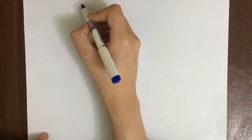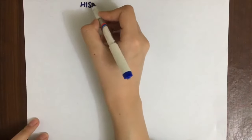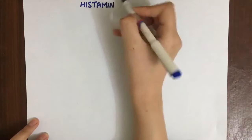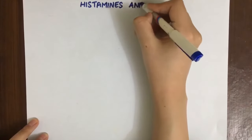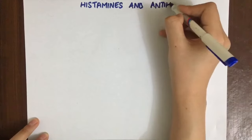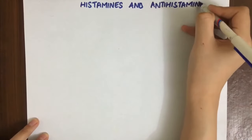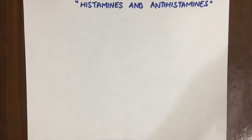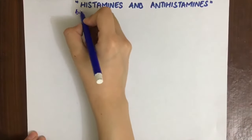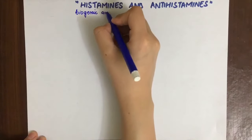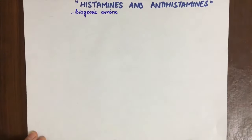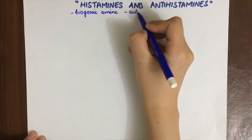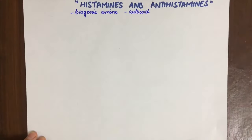This is the first lecture in the series on autacoids and respiratory pharmacology. This topic is about histamine and antihistaminic drugs. Histamine is a biogenic amine formed from decarboxylation of histidine. It is also an autacoid, which means it is produced and acts locally — that is why it is also called a local hormone.